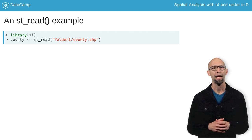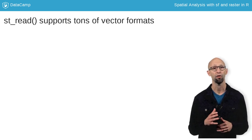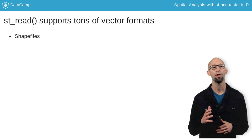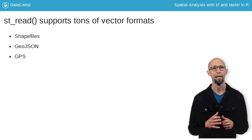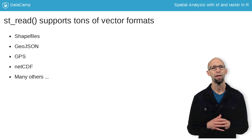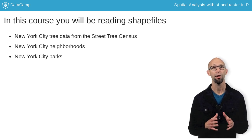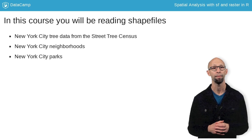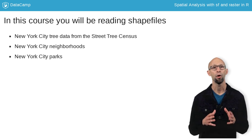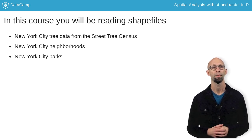As mentioned, st_read can be used to read in a wide range of spatial types, including shapefiles, GeoJSON, GPS, NetCDF, and others. Examples in this course will focus on reading in shapefiles since they are still the most common vector spatial format. In particular, we'll be using New York City data on trees, neighborhoods, and parks.